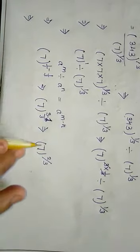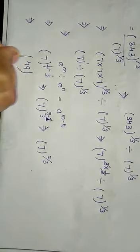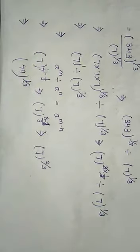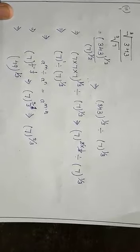So I can also write it as 49 to the power 1/3, since 7 squared is 49. So here this is the solution. Thank you.